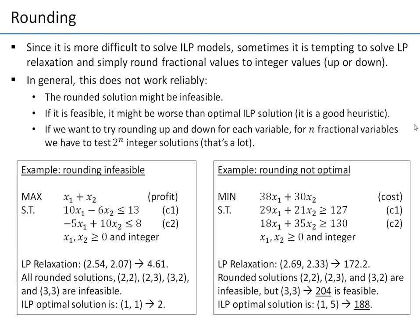The cases that may happen: the rounded solution might be infeasible. If you round the solution up or down, you might get infeasible solutions. So basically, whenever you do this, check that the solution is still feasible — check that after rounding you're still satisfying the constraints.